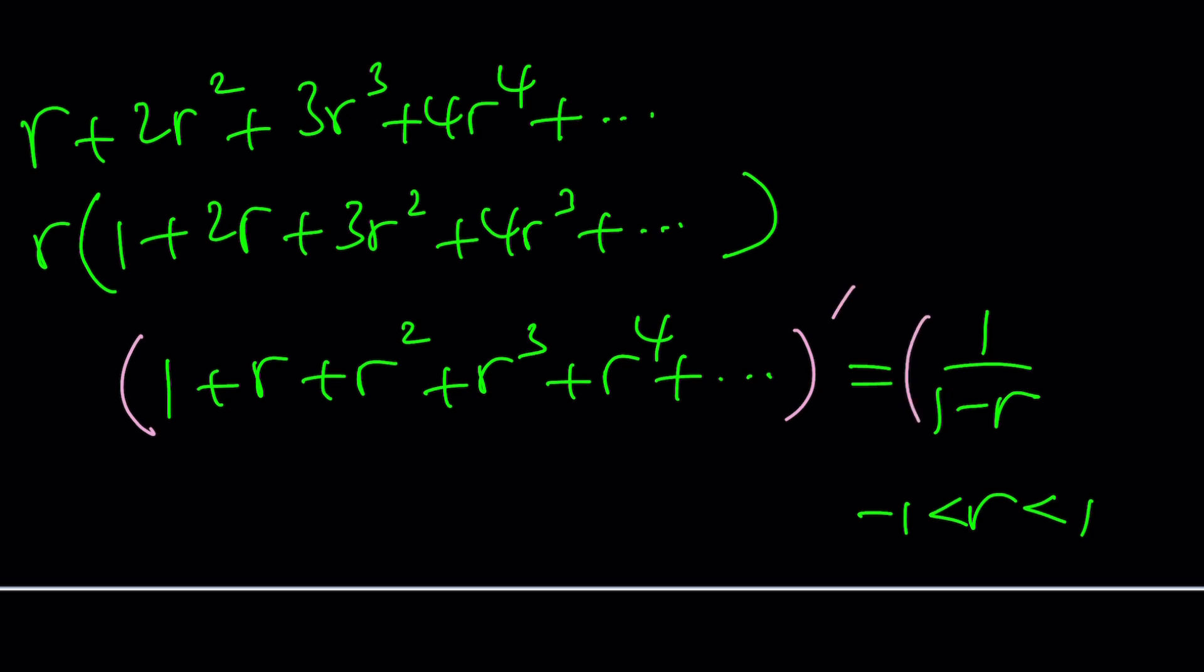Now we can go ahead and differentiate both sides. When we do, we get 1 plus 2R plus 3R squared plus 4R to the third, so on and so forth. And of course, the derivative is going to be 1 over 1 minus R squared. There is a negative 1 that comes from the derivative of negative R, but that's compensated by the power, so that becomes a positive power. I mean negative power because it's in the denominator.